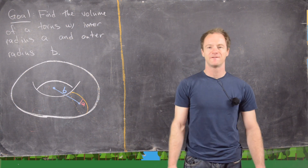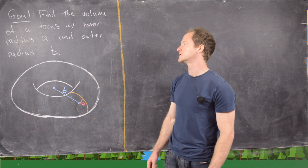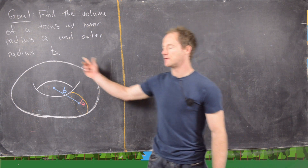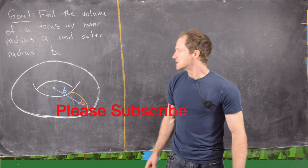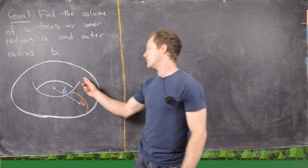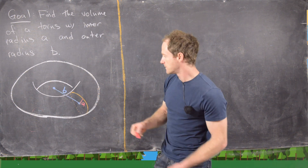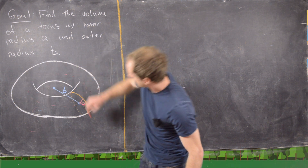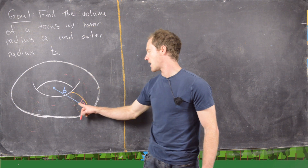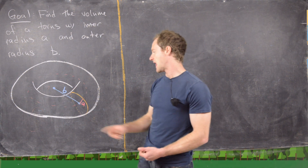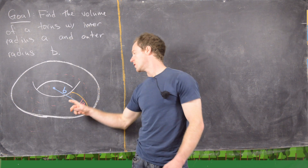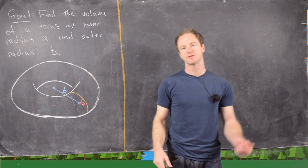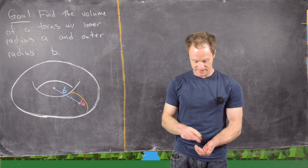In this video we have a goal of finding the volume of a torus with an inner radius of A and an outer radius of B. A torus is like a donut shape. We've got this outer circle with radius B, and then at every point on the outer circle we put another circle with radius A. So that's what we mean by inner radius and outer radius.